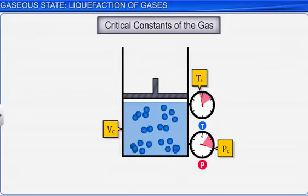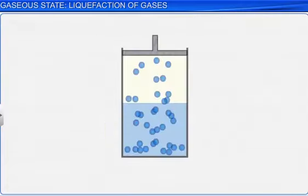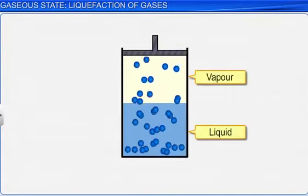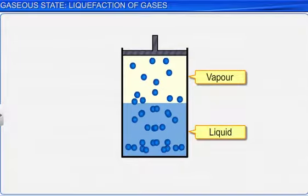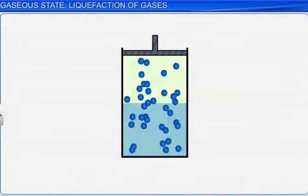A point where there is no distinction between the liquid and the vapor state of a gas is called the critical point, and the gas at this point is said to be in the critical state.